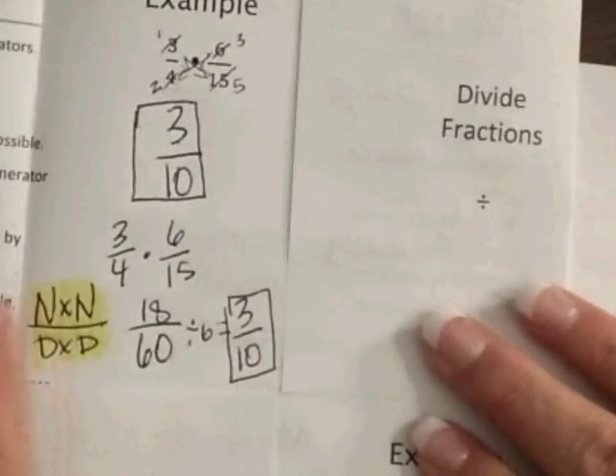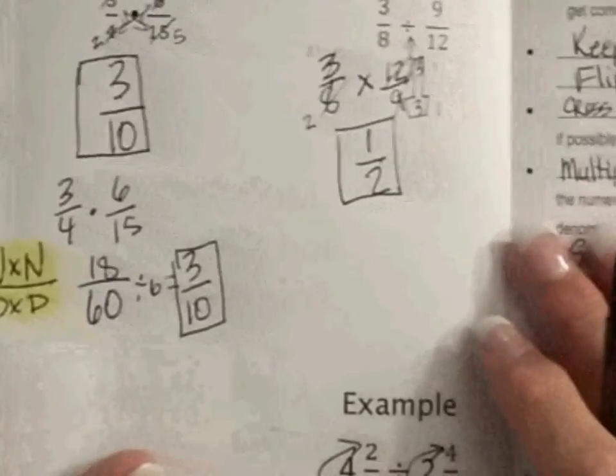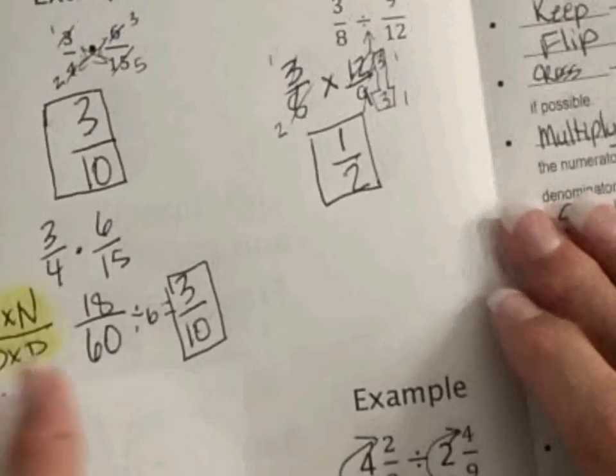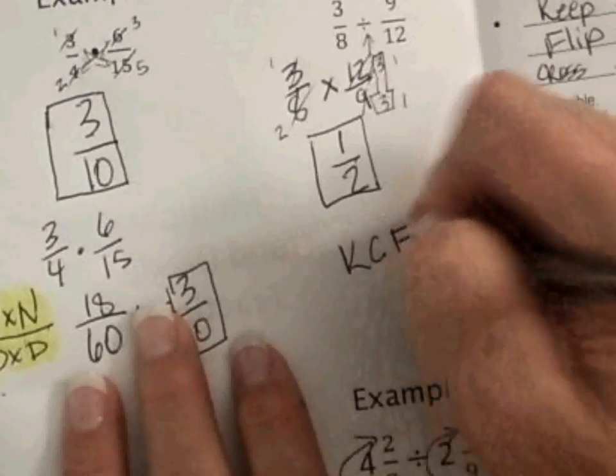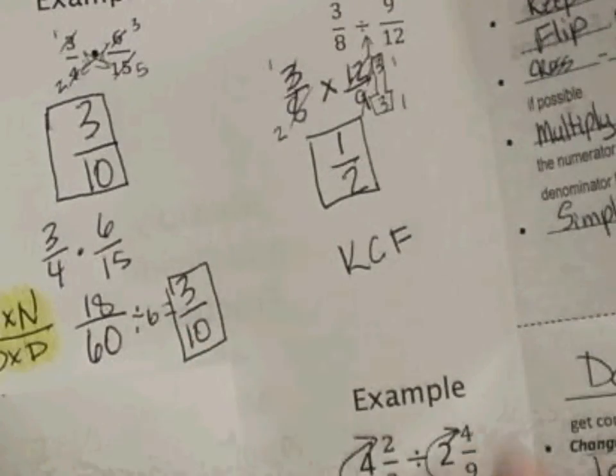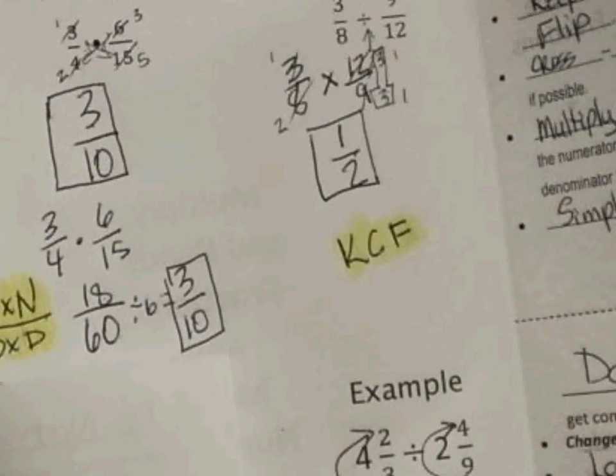Okay, so just to briefly recap, when you're multiplying your fractions, you're multiplying your numerators, and then you're multiplying your denominators. When you're dividing, you're going to do your keep, change, flip. Then you're going to multiply, just like you did. You're going to multiply like you did when you multiplied. Okay, thank you. Bye.